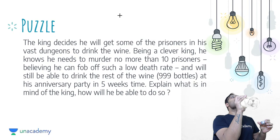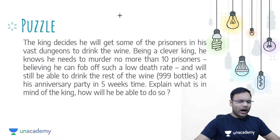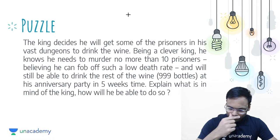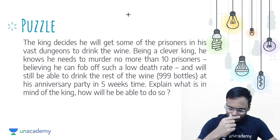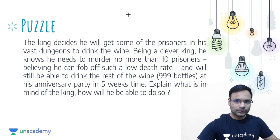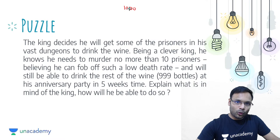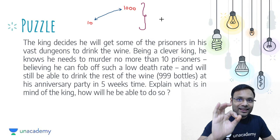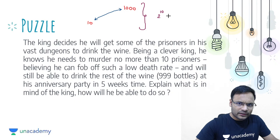Now you have to find out how exactly the king can identify which particular bottle has poison within four weeks or one month, because after five weeks the king has his anniversary party and he will serve wine at the party. So you need to find out how exactly the king determined which bottle is poisoned.